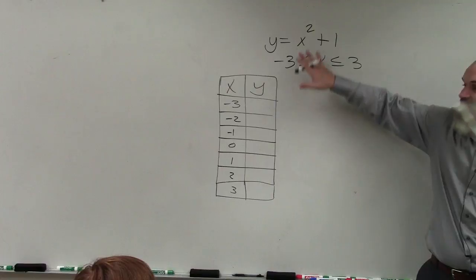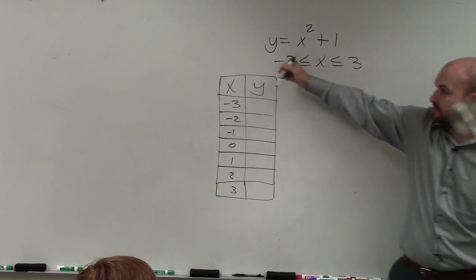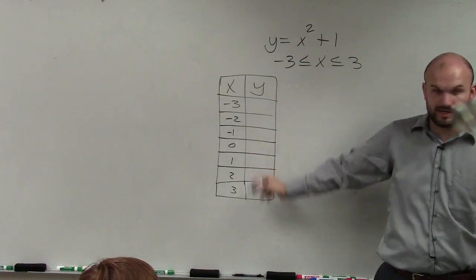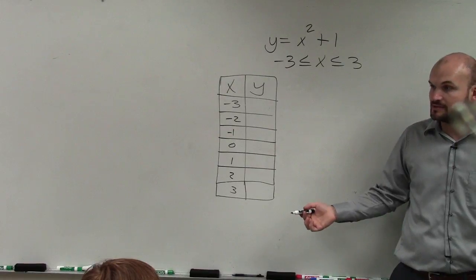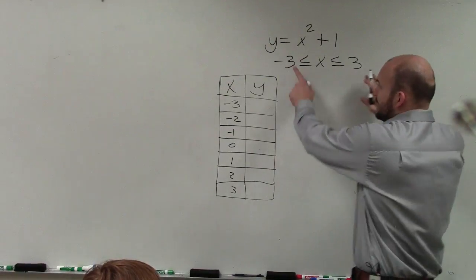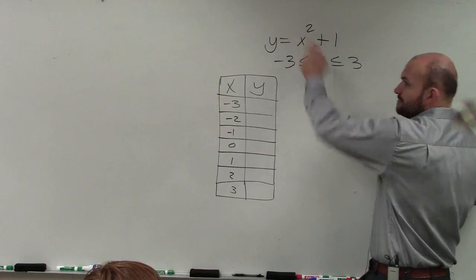So all I'm simply doing is taking my input values. I can see my x values are going between here and here. And then all I want to do is just find the y values. So to do that, I'm simply going to take each of my x values and plug them into my equation.